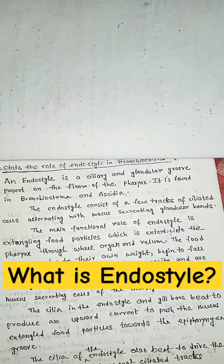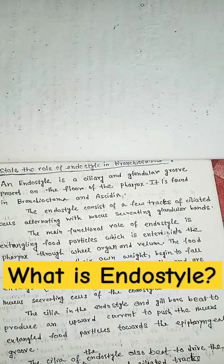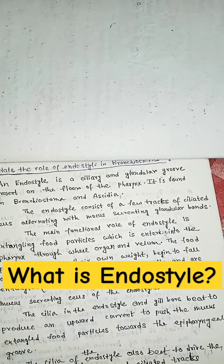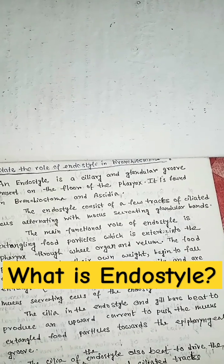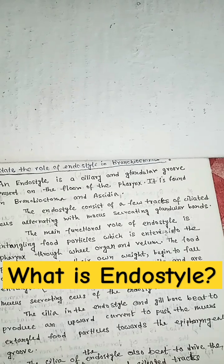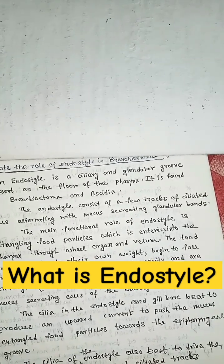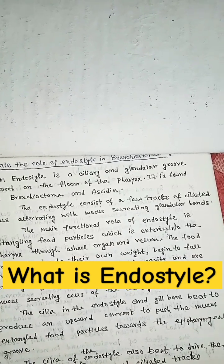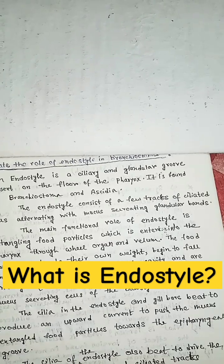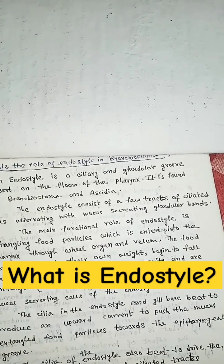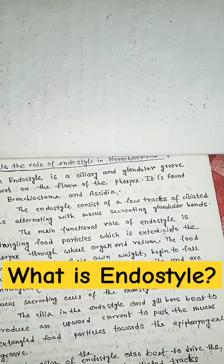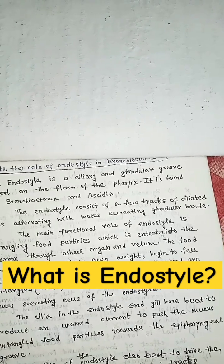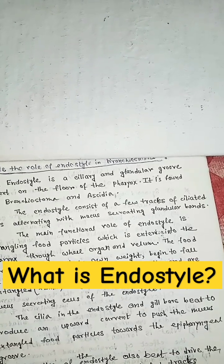The foot particles, due to their own weight, begin to fall on the floor of the pharyngeal cavity and are entangled by the sticky secretion of the mucus secreting cells of the endostyle. The cilia in the endostyle and gill bars beat to produce an upward current to push the mucus entangled foot particles towards the epipharyngeal groove.